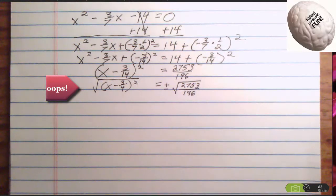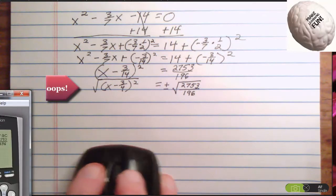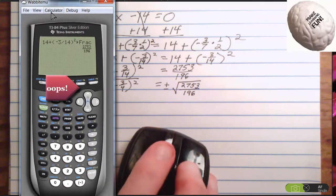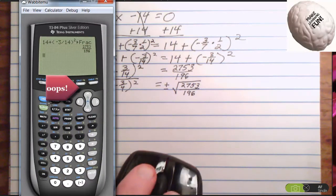Now, I doubt seriously that 2753 is a perfect square. I really, really doubt it, but let's try it.